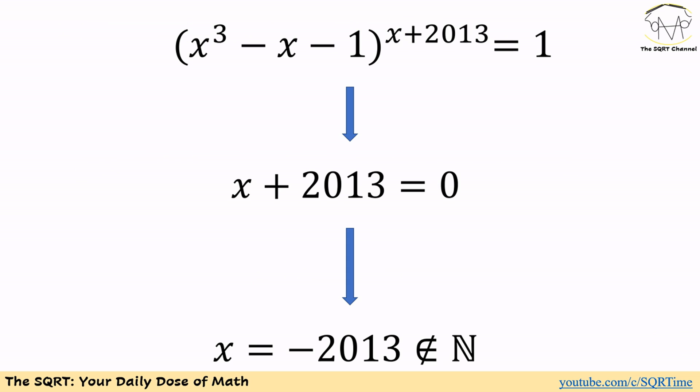To solve this problem, we are going to consider different options that we have for the base and for the power. When we have a number to the power of x equal to 1, x can be 0 as long as the base is not 0.